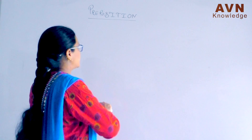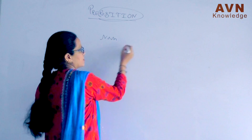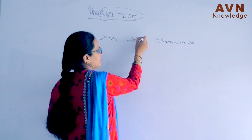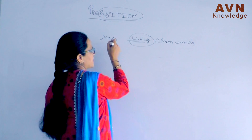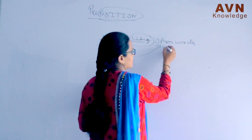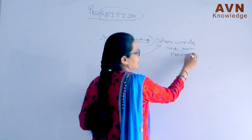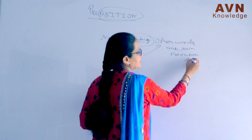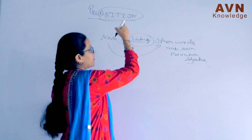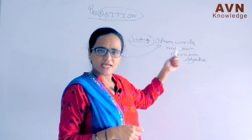Preposition, as its name suggests, shows position. It is a linking word that links a noun to other words. The noun can be linked to a verb, noun, pronoun, or adjective. That is the preposition — it tells about the position with other words. We will understand by examples.